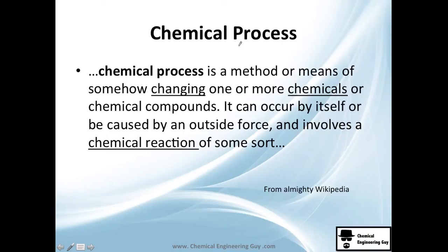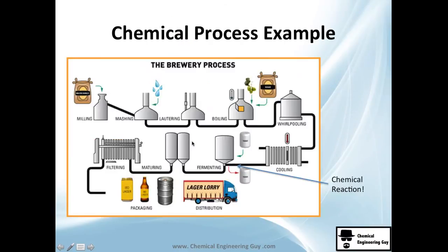Now, let's understand the difference between a normal process and a chemical process. A chemical process is essentially, let me show you the meaning of Wikipedia, I like it very much. It's a chemical process, it's a method or a means of somehow changing, you need to have a change. One or more chemicals, chemicals must be involved, or chemical compounds. It can occur by itself, it's not abnormal, or caused by an outside force, which we are going to give. And it always involves a chemical reaction. If there's no chemical reaction, it is not a chemical process. So, just learn this: change of chemicals, outside force, and it involves a reaction. If you understand that, you're going good.